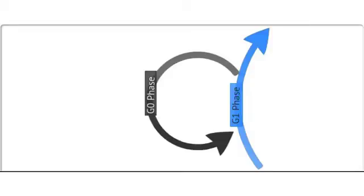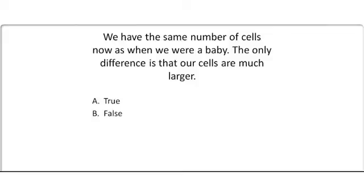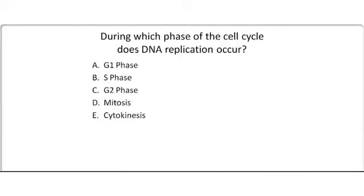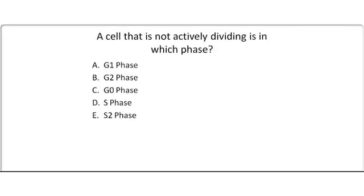Now that we have learned a little about cell division, let's see if we can answer these following questions — accessible on the course webpage for credit. First: we have the same number of cells now as when we were a baby, and the only difference is that our cells are much larger. Is this true or false? Second: during which phase of the cell cycle does DNA replication occur — the G1 phase, the S phase, the G2 phase, mitosis, or cytokinesis? Third: a cell that is not actively dividing is in which phase — G1, G2, G0, the S phase, or the S2 phase?